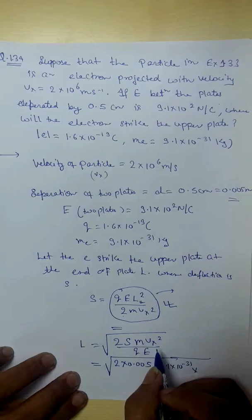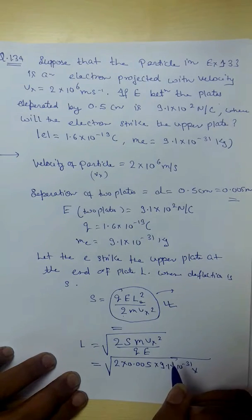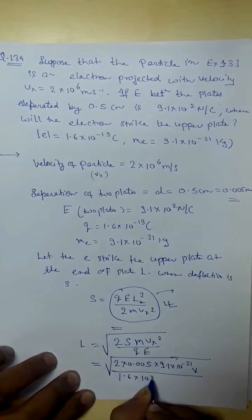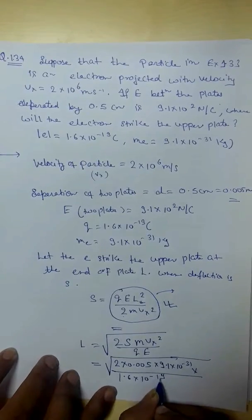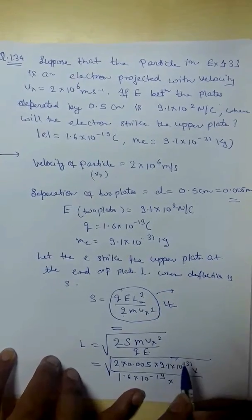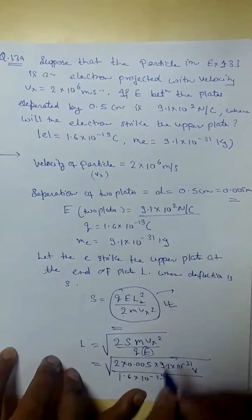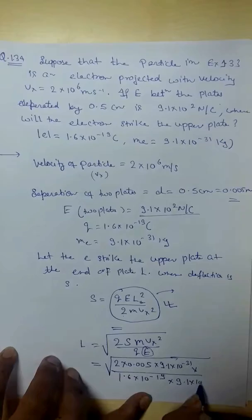So now next is charge. Charge is 1.6 into 10 to power minus 19 and here you have to put electric field. Electric field is 9.1 into 10 to power 2, right?